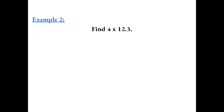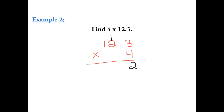Example 2: find 4 times 12.3. Again, I like to start with the bigger number on top, and now we're just going to multiply. 3 times 4 gives us 12. 4 times 2 gives us 8, plus 1 more gives us 9. 4 times 1 is 4.